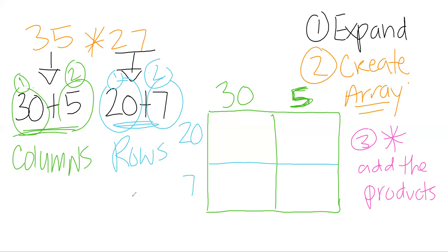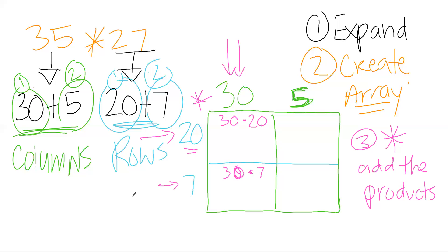I'm going to treat this like a multiplication times table, multiplying rows times columns, and write the problems in each box. This first column is 30, so I multiply 30 by the row of 20. Still in this column, I come down and multiply 30 by the row of 7. Then moving to the column of 5, I multiply 5 by the row of 20, and then 5 by the row of 7.